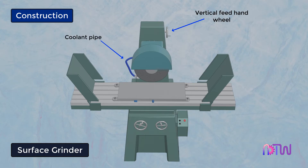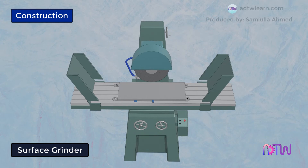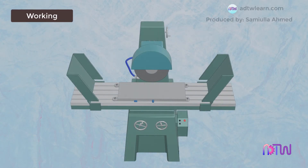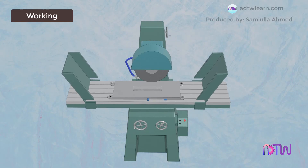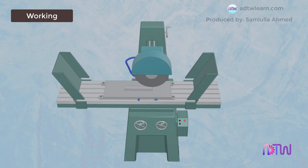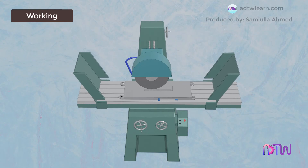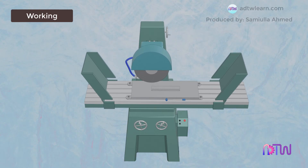A coolant pipe is provided to help reduce the temperature of the workpiece during grinding — the most commonly used coolant is water. In operation, the workpiece is placed on the magnetic table and the lever is turned on to magnetize and hold it rigidly. Coolant is then turned on, and by using both the hand traversing wheel and the cross slide wheel, grinding of the workpiece surface is carried out.